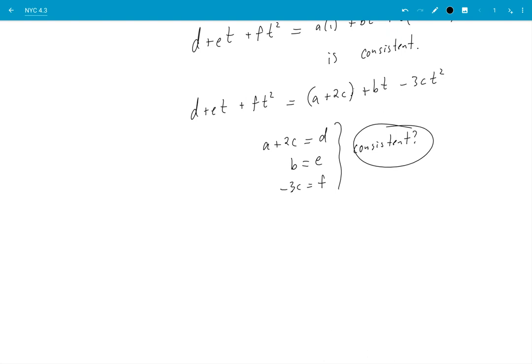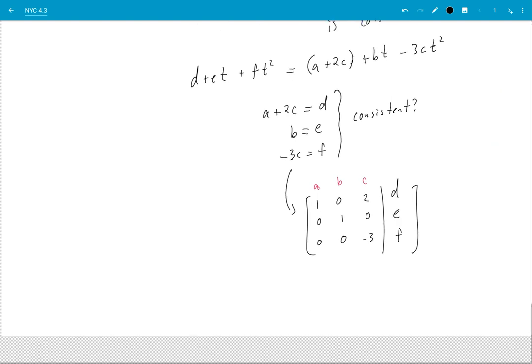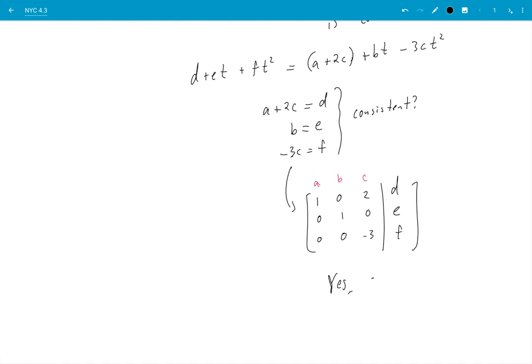So when I say consistent let me repeat I'm thinking of a, b, and c as being my kind of x, y, z usually use when I have a system of equations. So I put this into a matrix and I get [1,0,2|d], this is like my a column my b column and my c column. Next one is [0,1,0|e], [0,0,-3|f] and there we have it, yes consistent right.